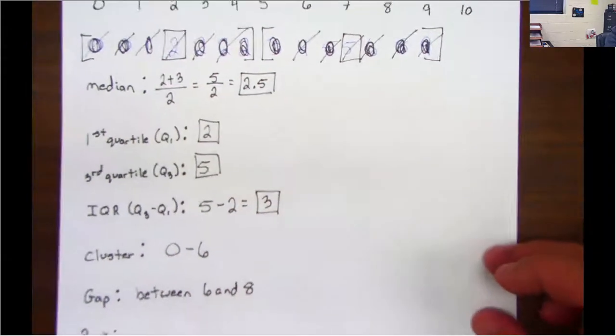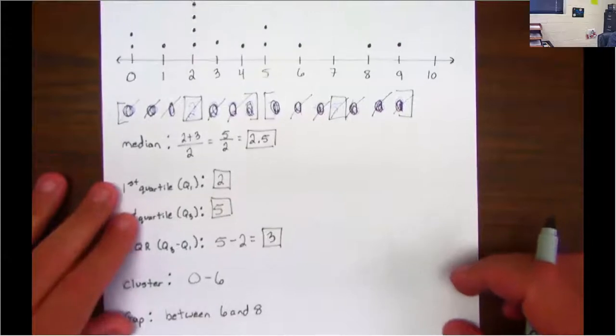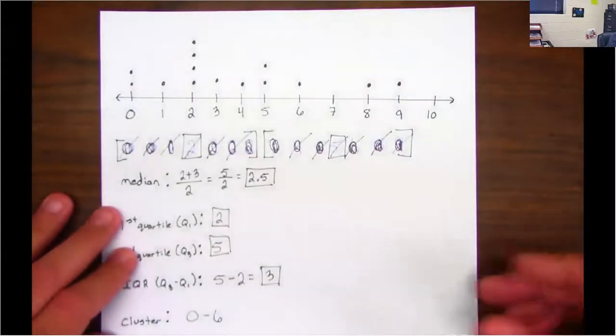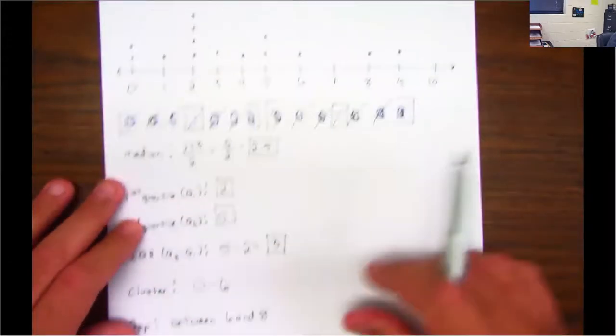Next one is peak, like the top of the mountain guys. Another word for peak is your mode, which number has the most dots on it. Two.